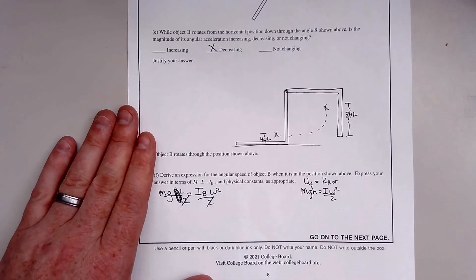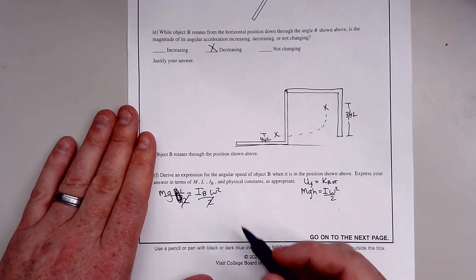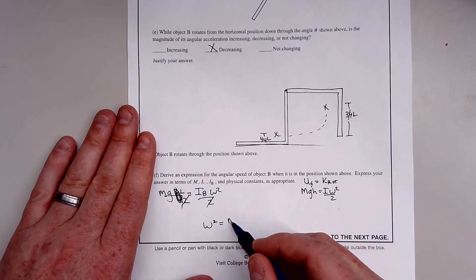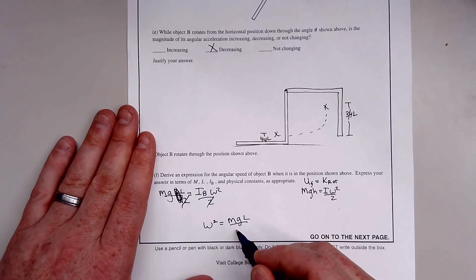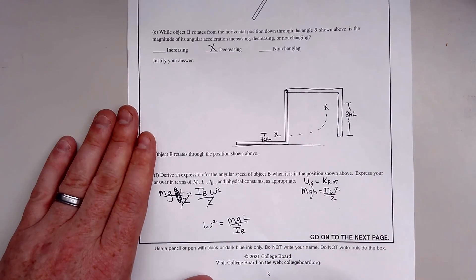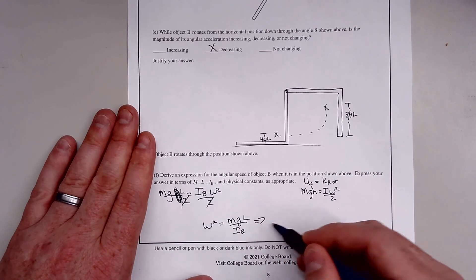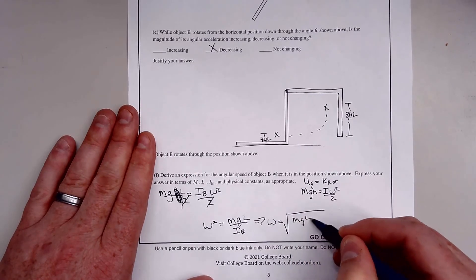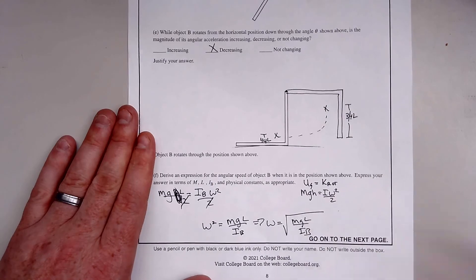That cancels out, and we're left with this equation. Omega squared equals MGL over I of B. Solving for that, we get omega equals the square root of MGL over I_B.